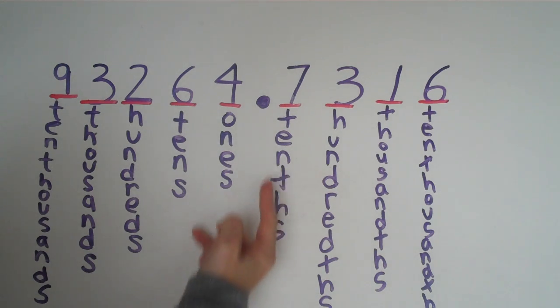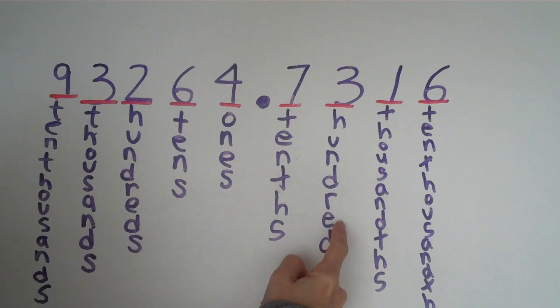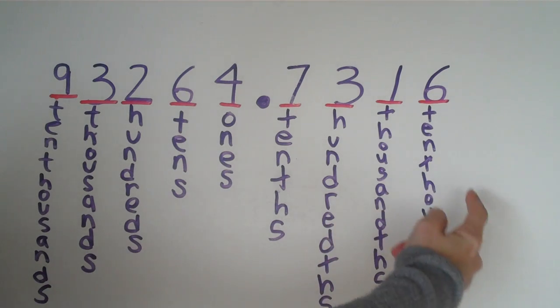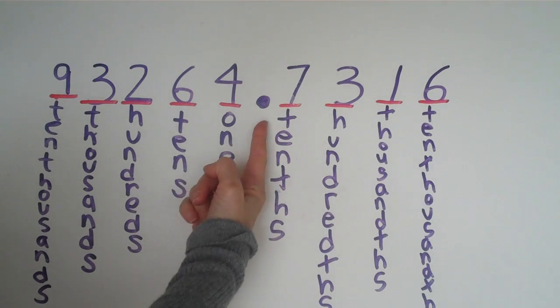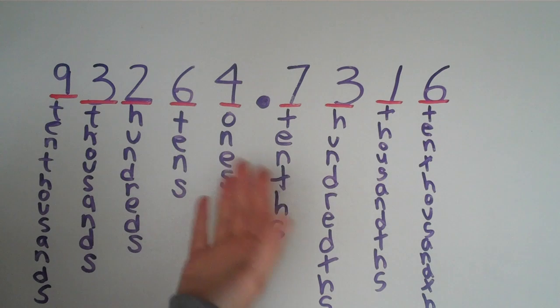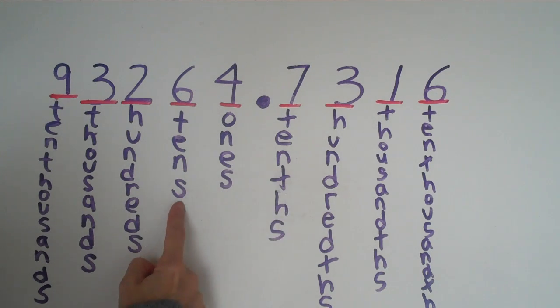If you look at the place value chart here, you see that the decimal is right here. From the decimal to the right, we have tenths, hundredths, thousandths, ten thousandths. And then on the left, it's just like counting money: ones, tens, hundreds, thousands, and ten thousands, and so on.